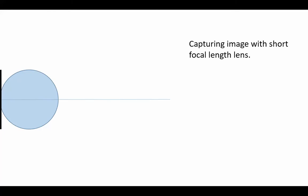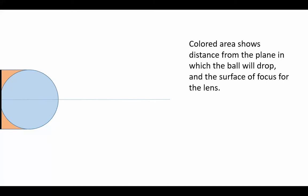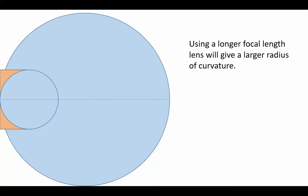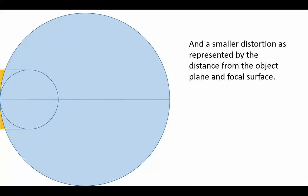We're going to move that object over to a side on the screen, and then once again we're going to have the motion of the object. When you're capturing the motion with a short focal length lens, you can see that there's a large distance between the focal surface and the motion of the object, as represented by the colored area on the left-hand side. By using a longer focal length lens, there will be a larger radius of curvature, and the distance between the focal surface and the plane of motion of the object will be smaller.